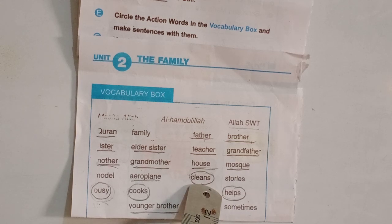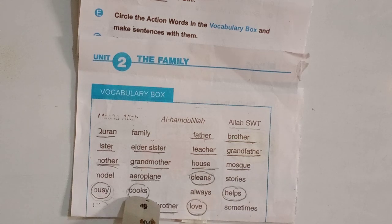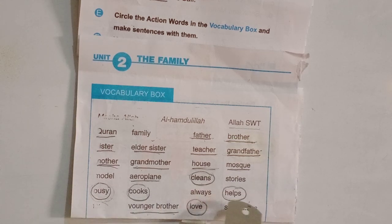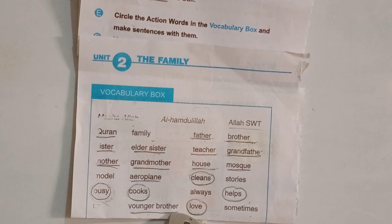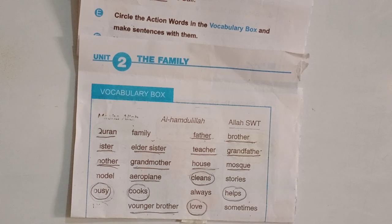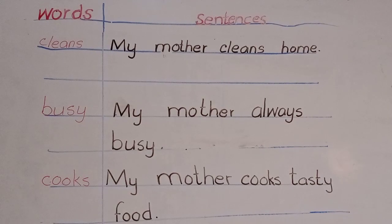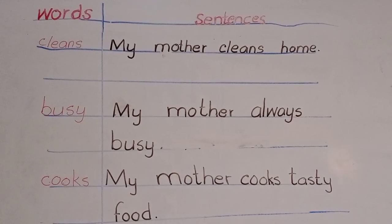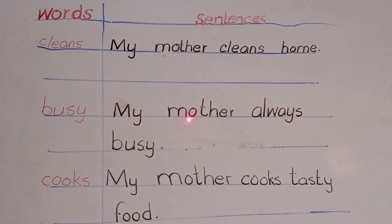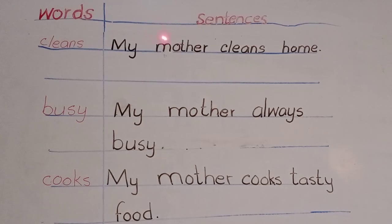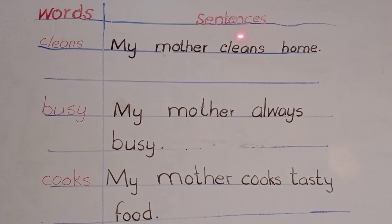Number 1 is cleans, busy, cooks, helps. And the last one is love. Now we will make sentences of them. Take out your English copies and make the columns. In the first column, you will write the words. And in another column, you will write the sentences.